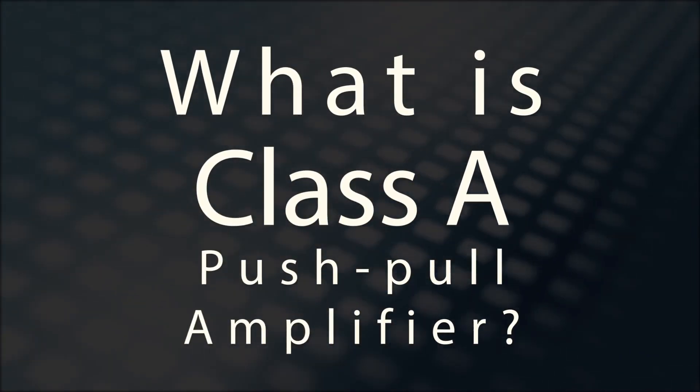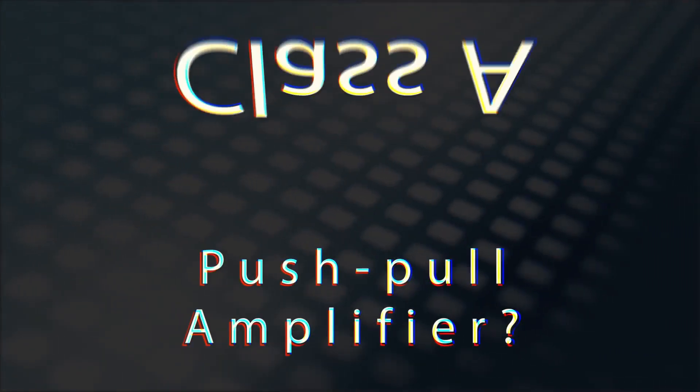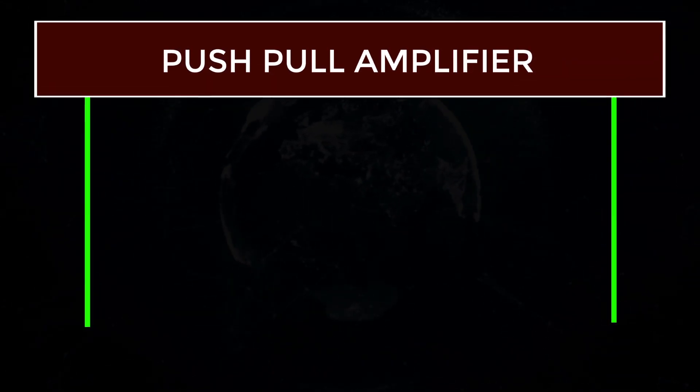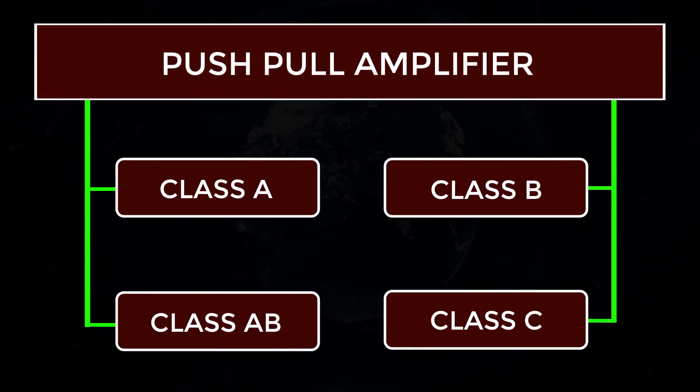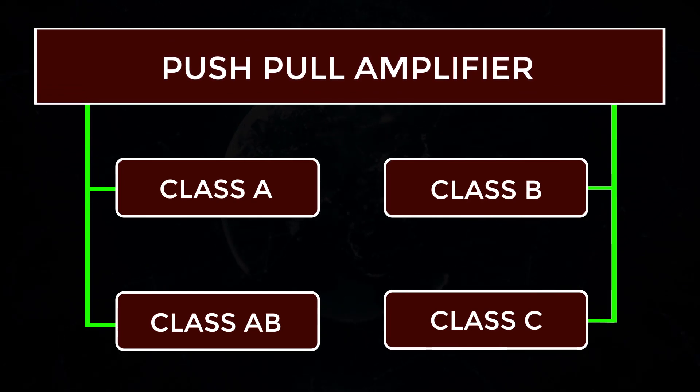What is a Class A push-pull amplifier? A push-pull amplifier can be made in Class A, Class B, Class AB, or Class C configurations.